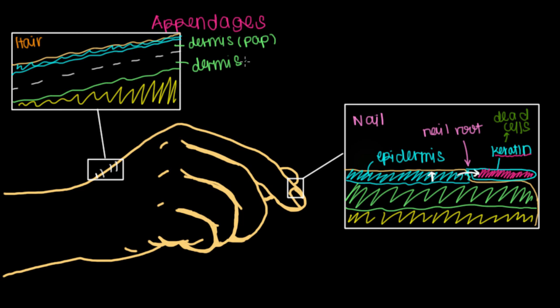Which is the top layer of the dermis. And then there's the reticular layer. And if you recall, the papillary layer is the thinner, looser connective tissue layer. And the reticular layer is the thicker, more dense, or denser connective tissue layer.